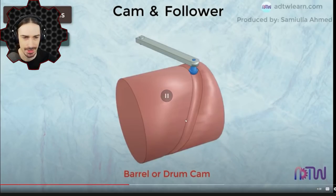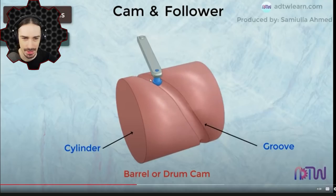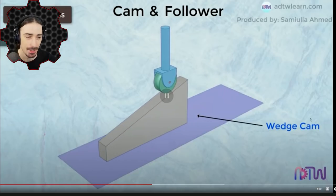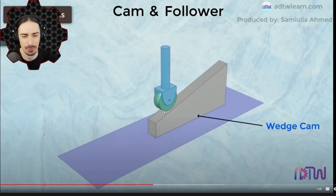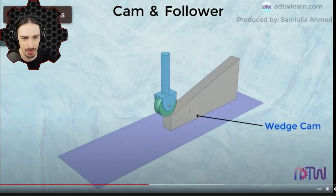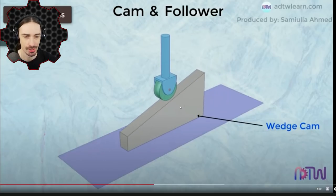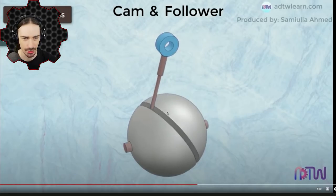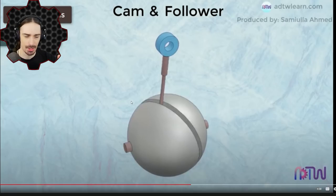There are actually a bunch of different types of cams. Look at this barrel or drum cam - this definitely won't be workable in Scrap Mechanic, so we'll focus on the more basic one. There's apparently also a wedge cam, which kind of confuses me because if the purpose of a cam and follower is to convert rotary motion to linear motion, why is this converting linear motion to more linear motion? Either way, there's also a spherical version.